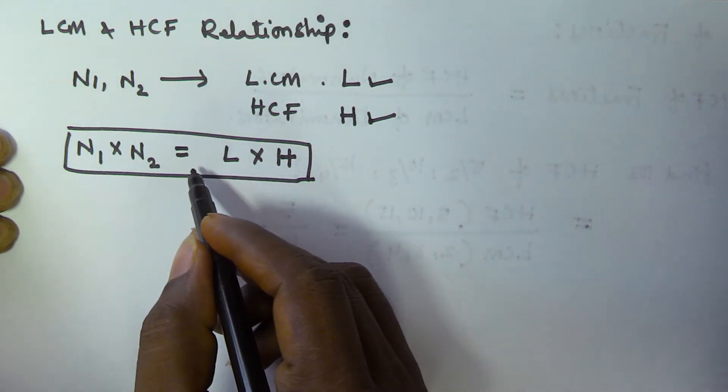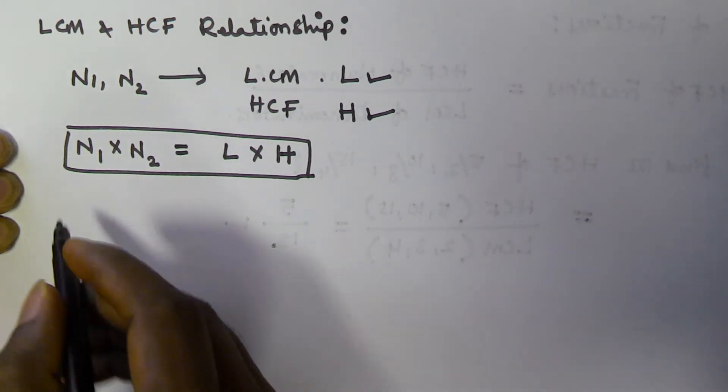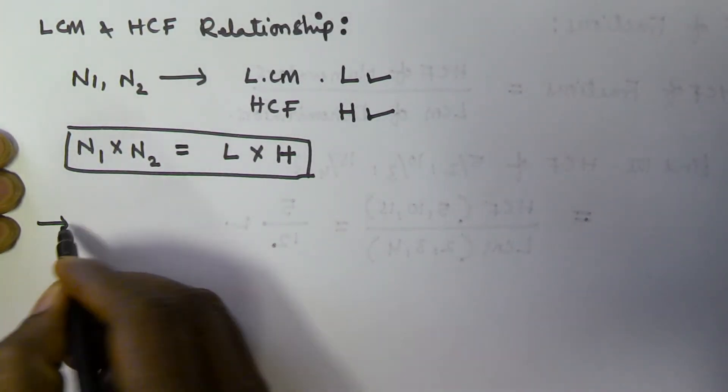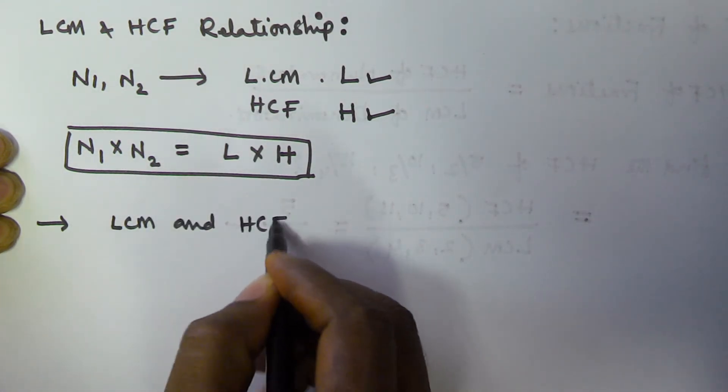So let us see one problem. LCM and HCF of 60 comma x is 180 and 30.